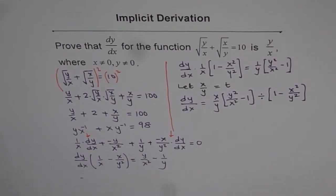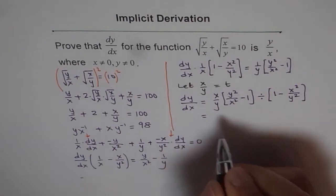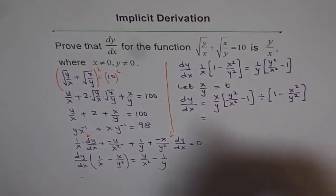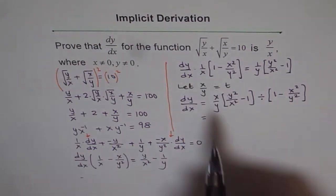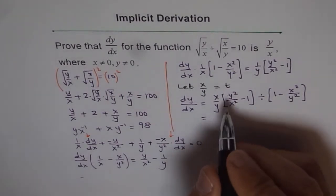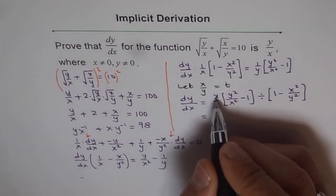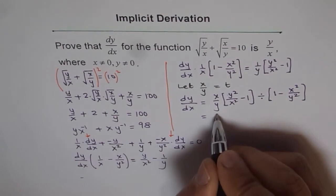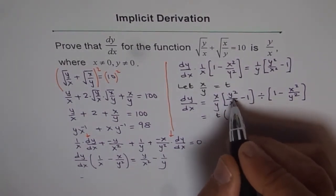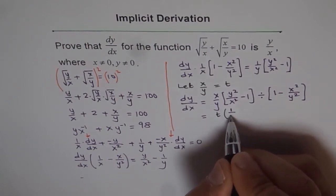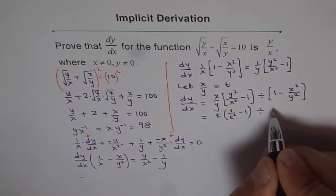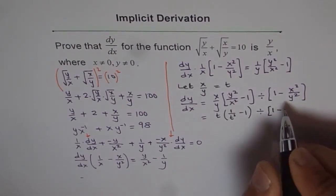So this is just to save some space and make it clear. Anyway, now we will substitute this t here for x/y, and then see what happens. It becomes simpler. So x/y is t for me, so this term is t. Now this term is reverse of x/y. So it is 1/t² - 1, divided by 1 - t².